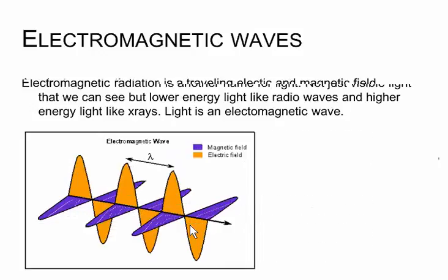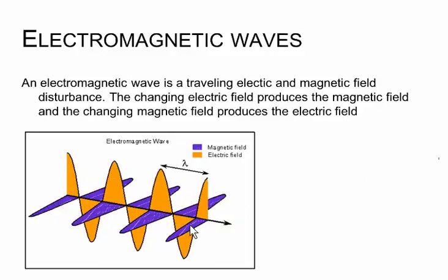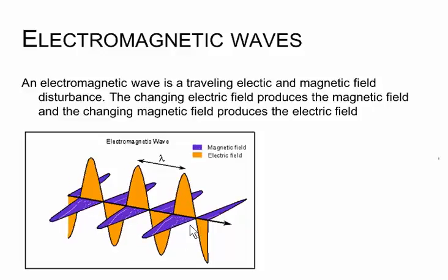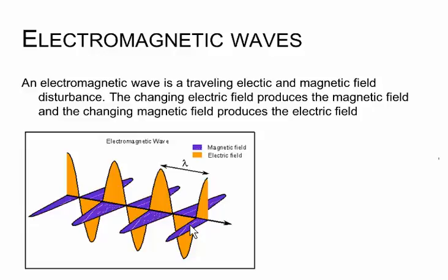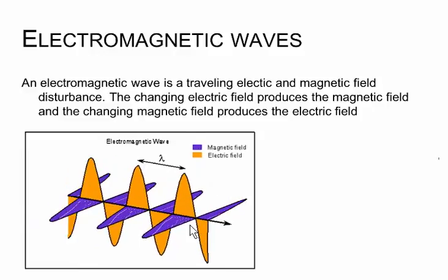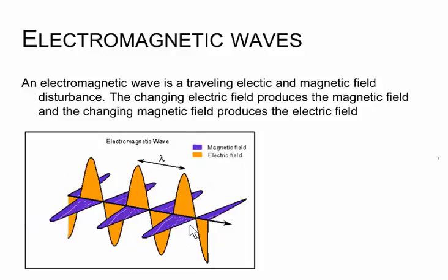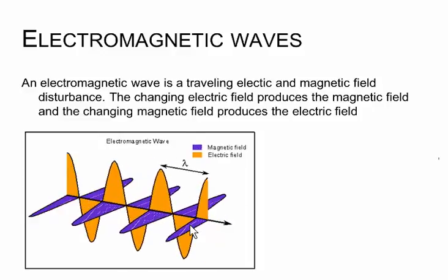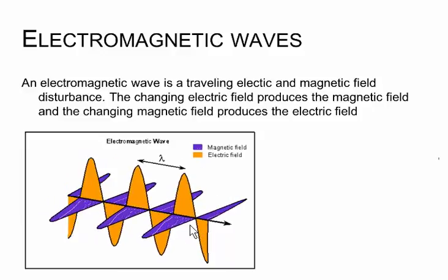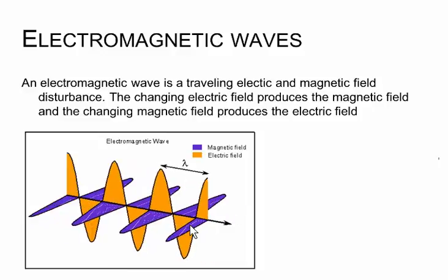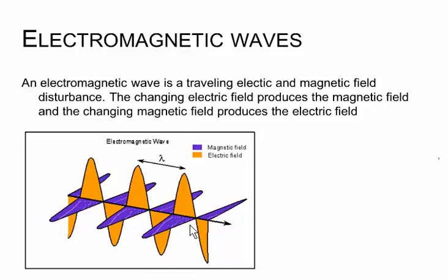An electromagnetic wave is a traveling electric and magnetic field disturbance. The changing electric field produces the magnetic field and the changing magnetic field produces the electric field. Very strange interactions these two phenomena. You may be familiar that when a magnetic field changes it moves electrons, that's the basis for an electric generator. That is the rough idea of electromagnetic waves, except these guys actually launch and don't need a wire to go through the air.